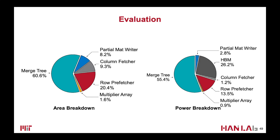We also conduct the area and power breakdown of our design. For area, the largest part is the merge tree, and the second largest is the row prefetch. For power consumption, the largest part is also the merge tree, and the second is the high bandwidth memory. The power of the row prefetch becomes the third largest.